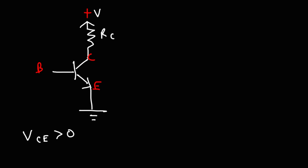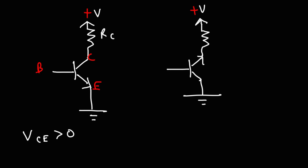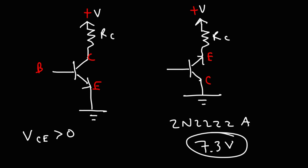In order to get the negative resistance of this device, you need to reverse the connections of the collector and the emitter. You don't need to use the base for this to work. So if you change the configuration like this, the collector and emitter junctions will now exhibit negative resistance when a certain threshold voltage is reached. For the 2N2222A transistor, that threshold voltage is approximately 7.3 volts, at least when I tested it.